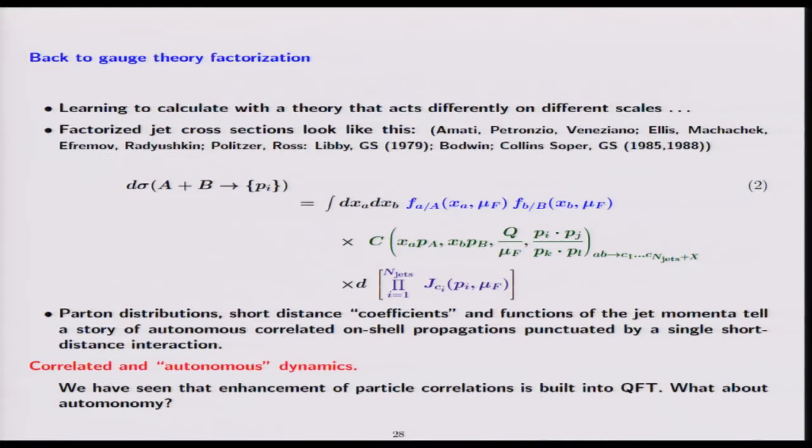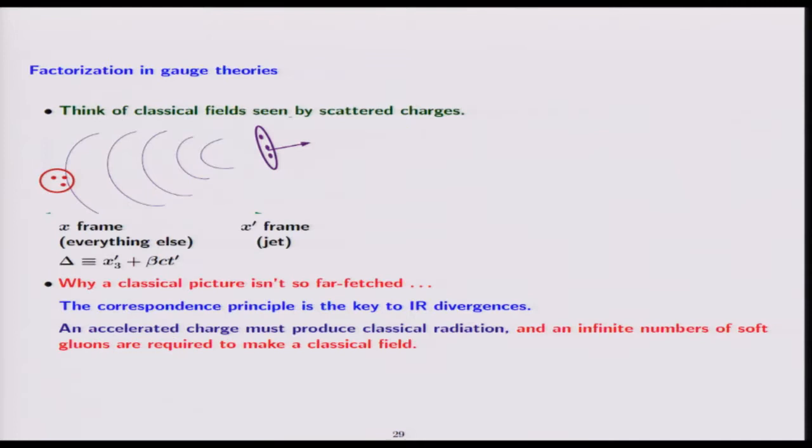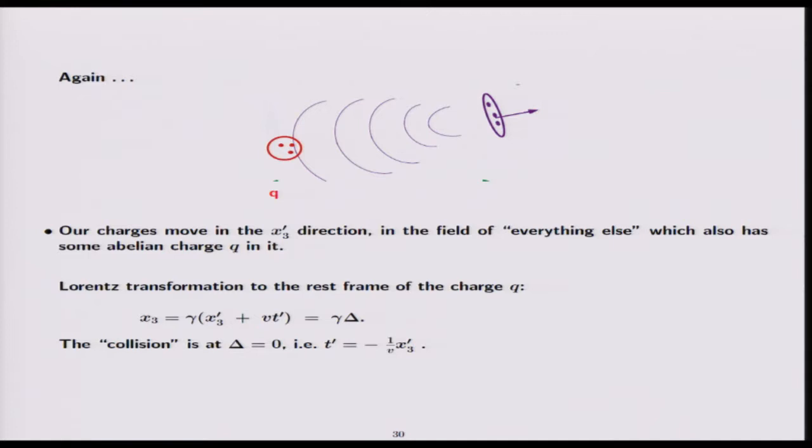Back to factorization. Five minutes remaining. Here we have a general cross-section a+b, which would be p+p at the Large Hadron Collider. The story is that you start out with parton distributions, you have the thing called σ_hat, and then you produce a whole bunch of partons going out. These are represented by functions that describe the dynamics of the jets. What we have here is correlated, autonomous dynamics. The dynamics of the jets are autonomous—they factorize from each other like the parton distributions factorize from each other. We have some sense that this is happening because of the enhancements that we identified before by asking general quantum mechanical questions.